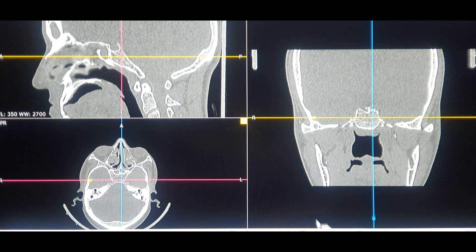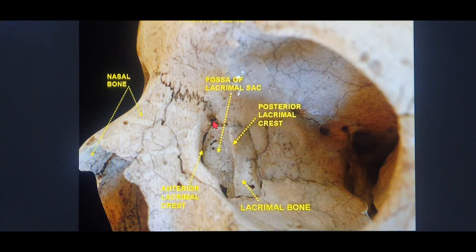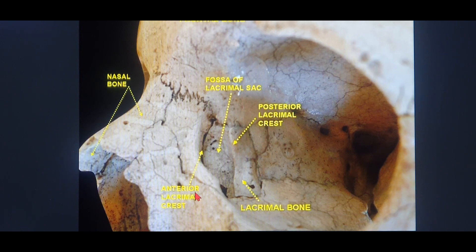First, you need to locate the lacrimal fossa, as you can see in this photograph — this is the fossa of the lacrimal sac, in which the lacrimal sac is lodged and covered with lacrimal fascia all around. Anteriorly it is bounded by the anterior lacrimal crest, which is formed by the frontal nasal process of the maxilla. Posteriorly and inferiorly it is formed by the lacrimal bone, which is a thin bone and is damaged easily during surgery.